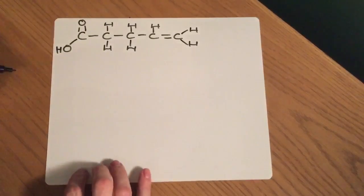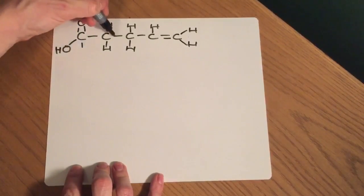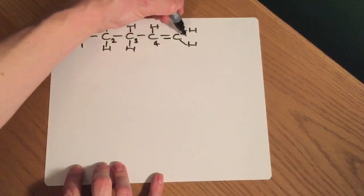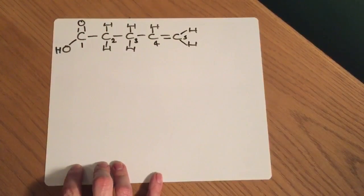So first thing I'm going to do to give you a hand with this is I'm going to number my carbon chain like so. So you can see I've got five carbons in there.